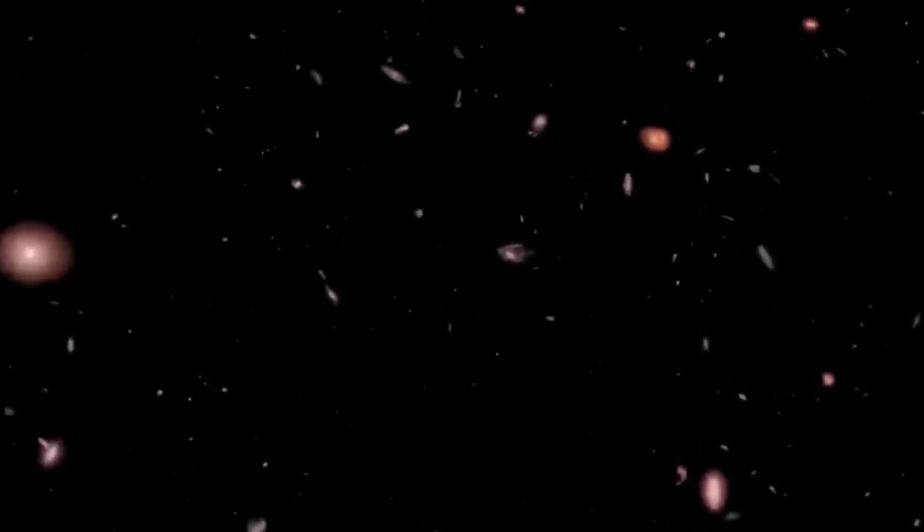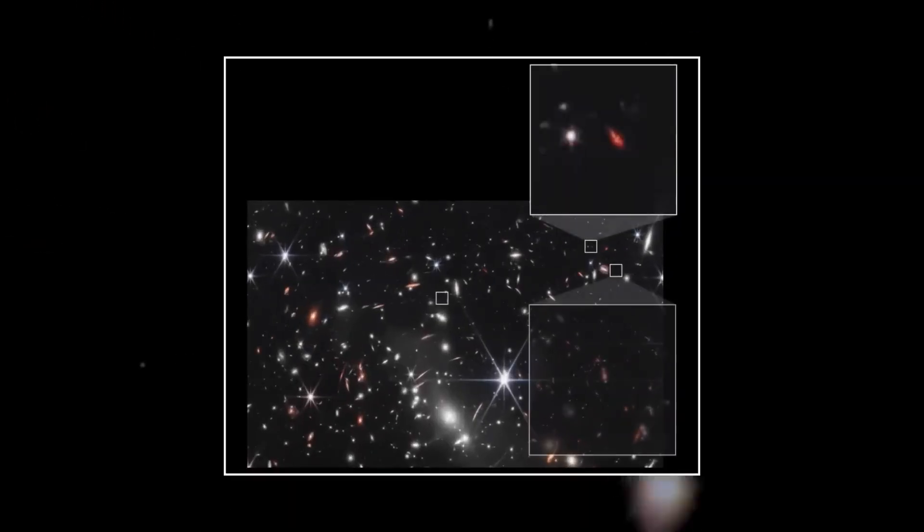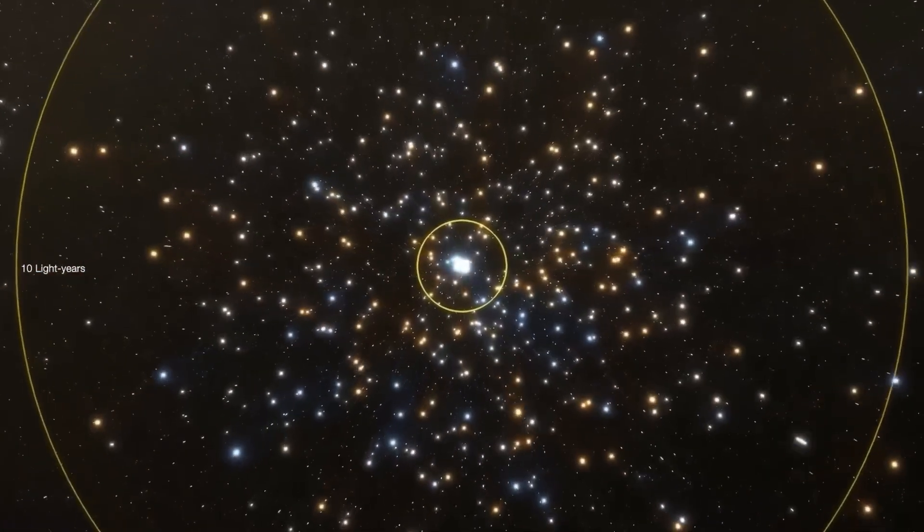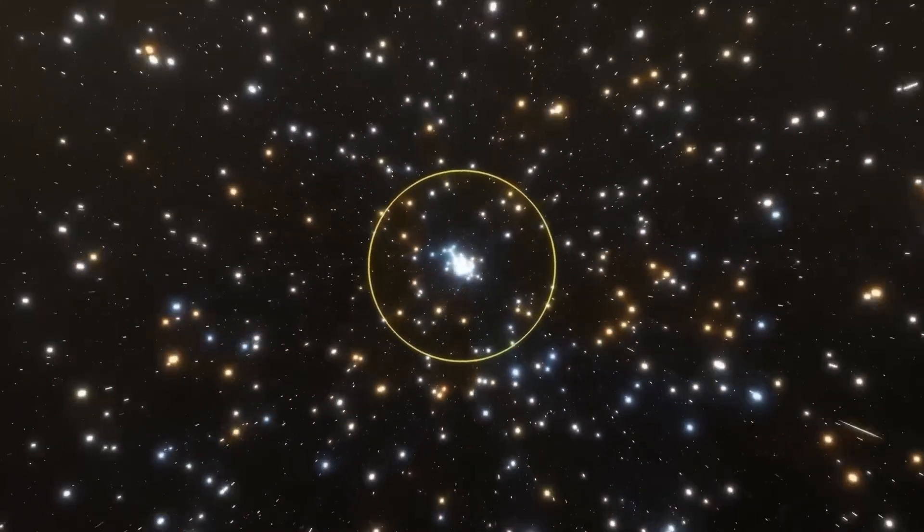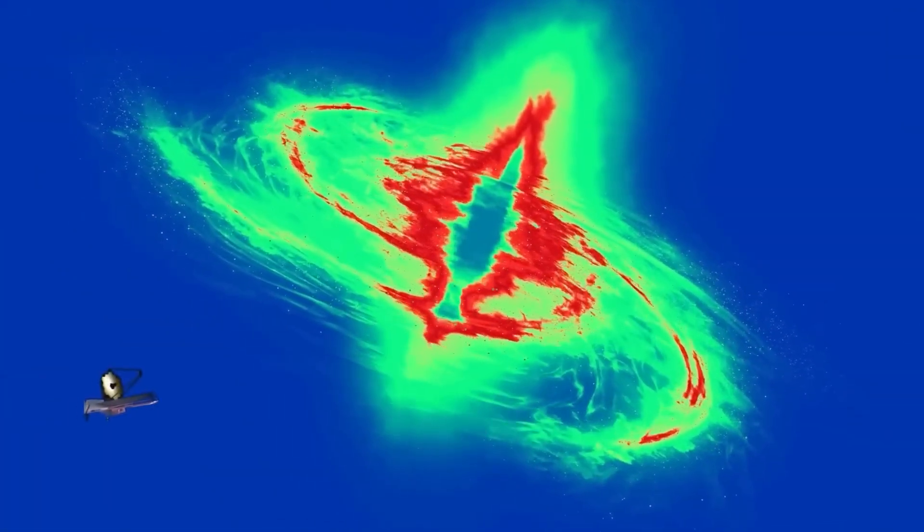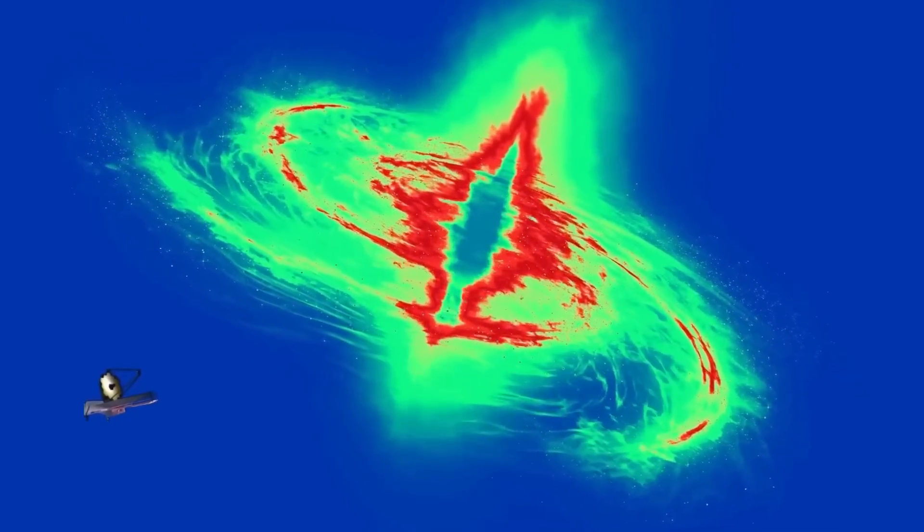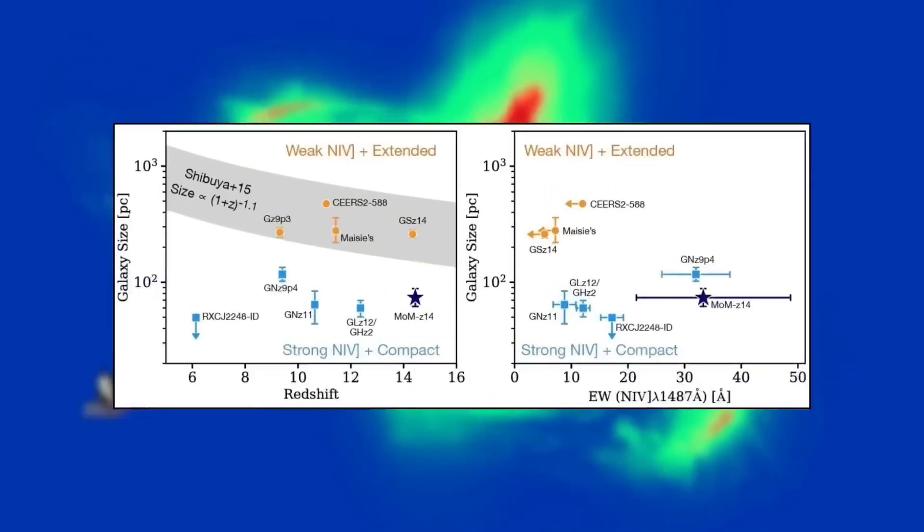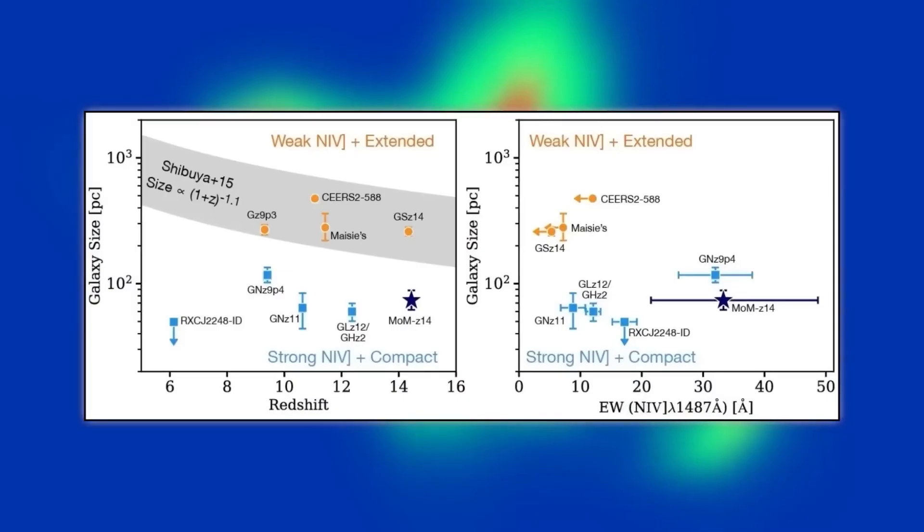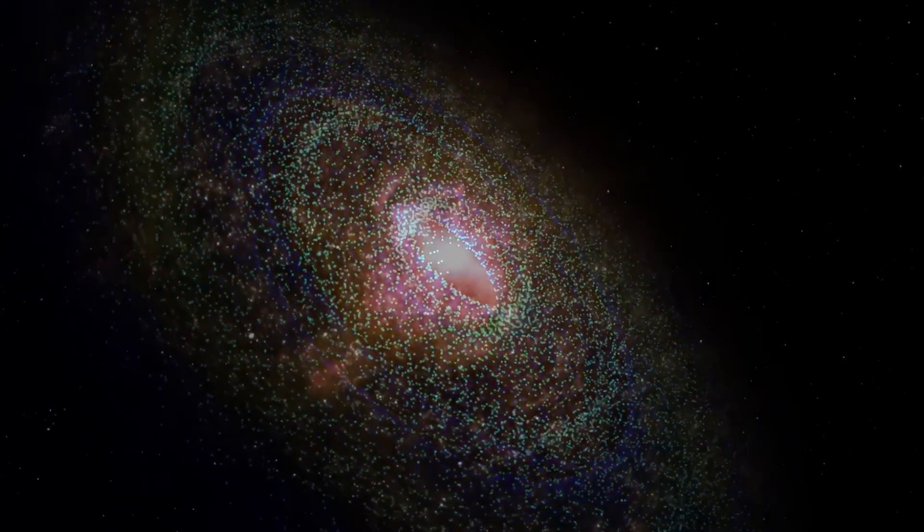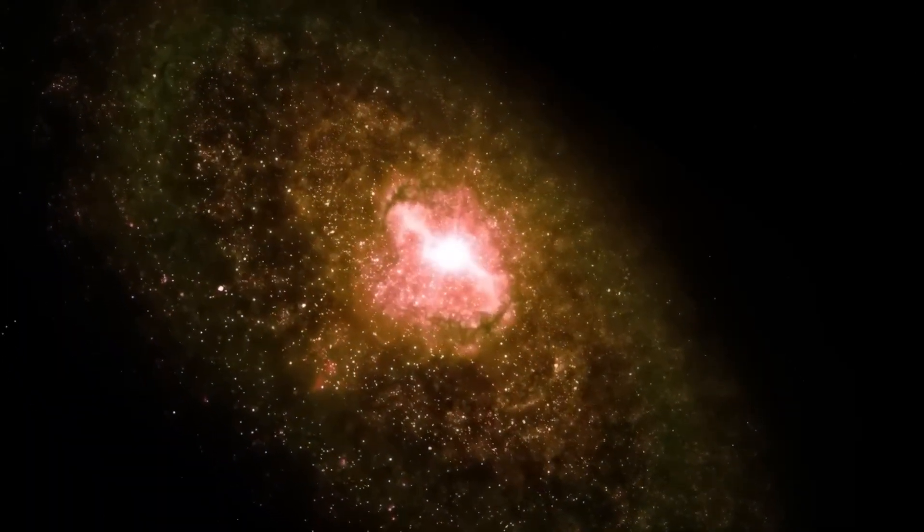Scientists calculated that this new path would take the object toward a region of space almost completely empty. No known stars. No planets. No gravitational bodies of interest. Which raised a terrifying possibility. Maybe that emptiness wasn't a void at all. Maybe it was a signal drop-off point. Or worse, a relay station. A place where whatever 3i Atlas had recorded could be passed along to something else.